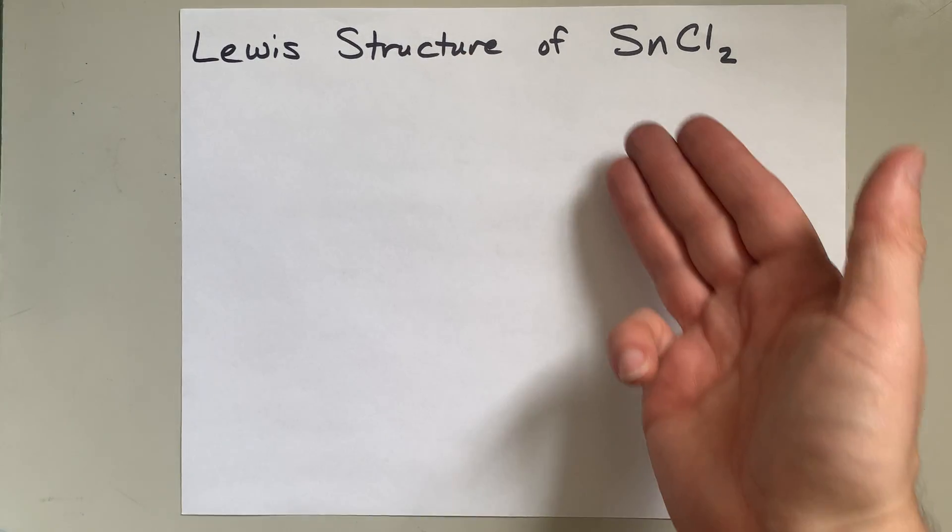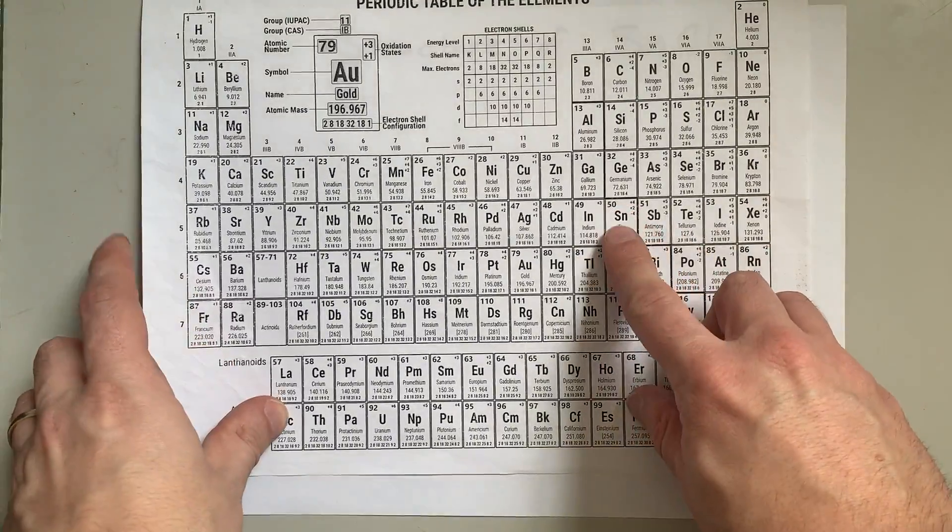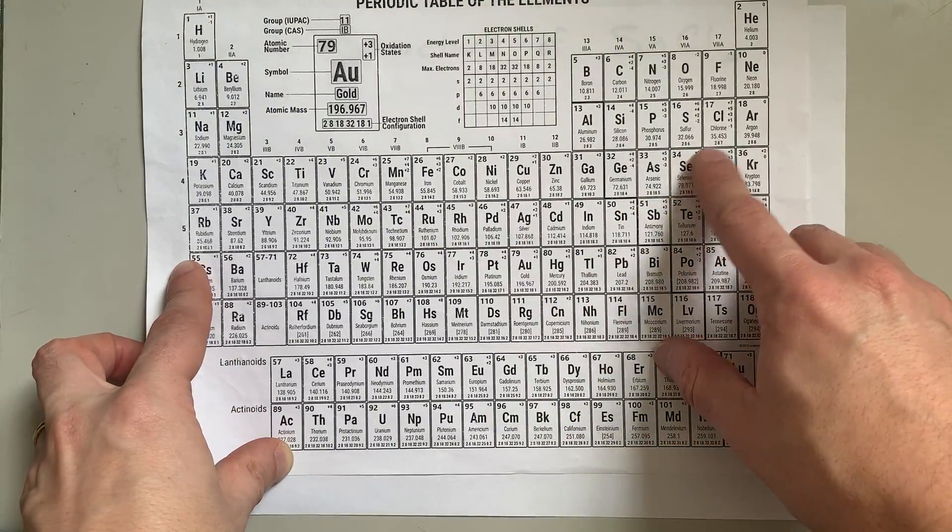We're going to draw the Lewis structure of tin-2-chloride. Now, tin is a metal, and chlorine is a non-metal.